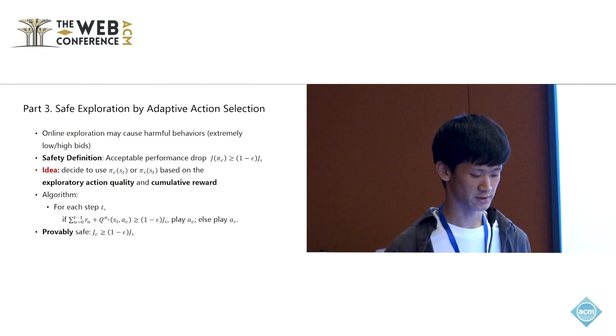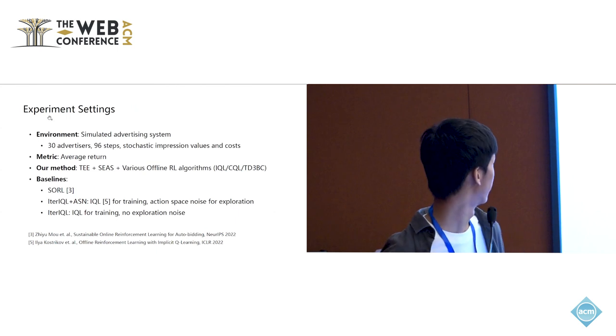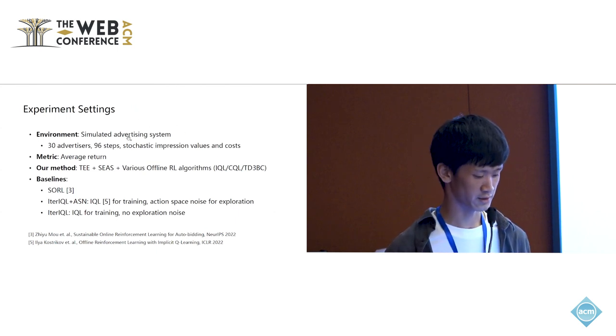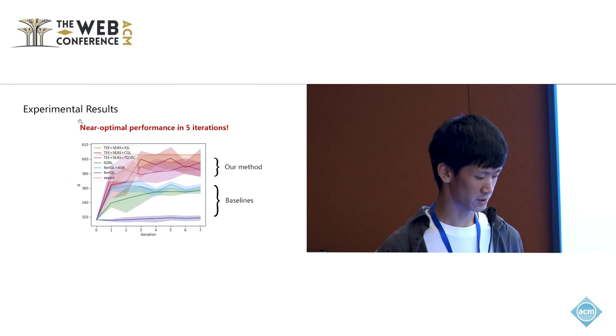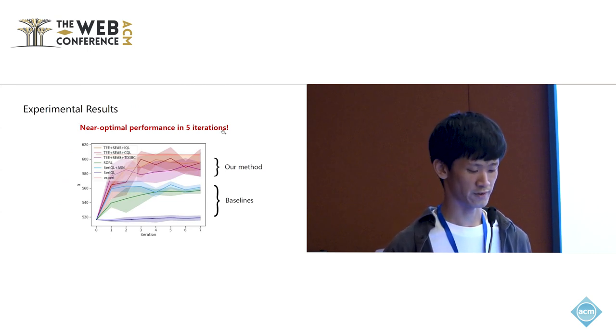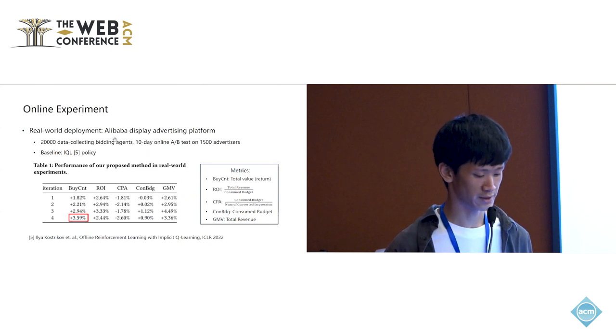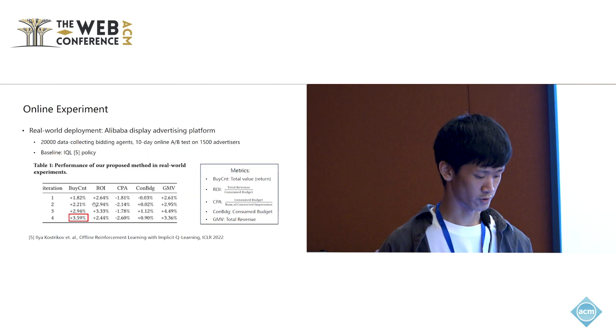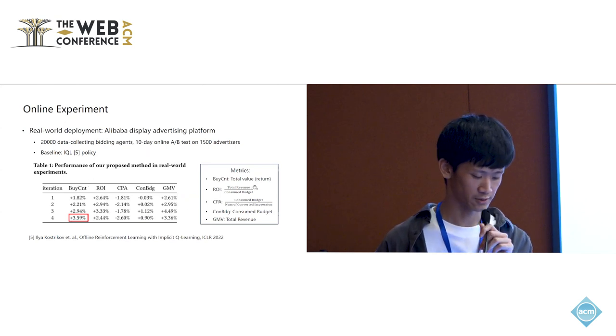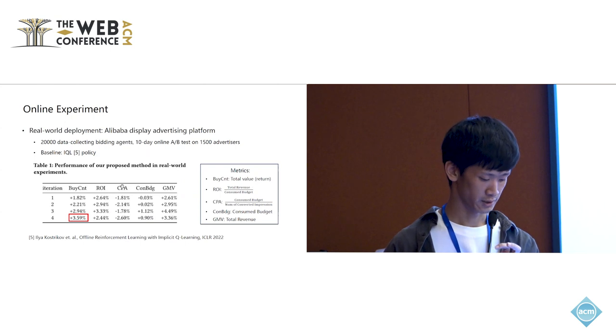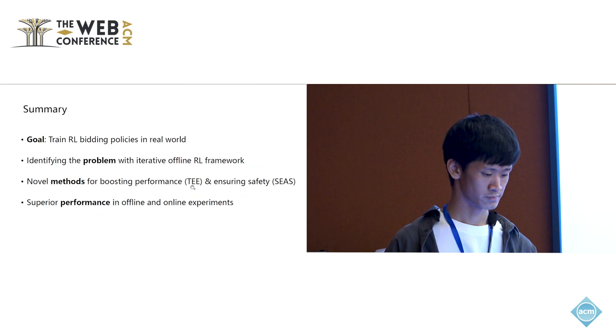We conducted experiments in a simulated advertising system and we will combine our method with three different offline algorithms and comparing it with those baselines. We can see that our methods achieve near optimal performance within about five iterations and outperforms all the baselines. We also conducted online experiments in Alibaba display advertising platform and we can see that there is consistent performance growth throughout the iterations in terms of buy count, which is the total value and which is the return of our algorithm, and also ROI and GMV growth.